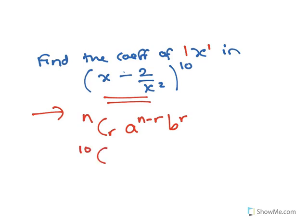Instead of expanding the whole thing, you go 10Cr, x to the 10 minus r, b which is minus 2 over x squared, to the r.